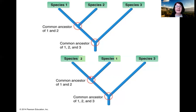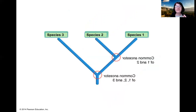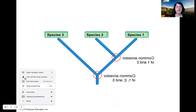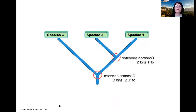These branch points are also called nodes. A tree can be rotated around the nodes without changing the essential information provided by that tree. If I were to rotate around species X — the first branch point — I'd now start with species three and proceed to species one and two. That also does not change the information: there are still two speciation events, the first yielding species three and the common ancestor of one and two, and the second leading to species one and two.